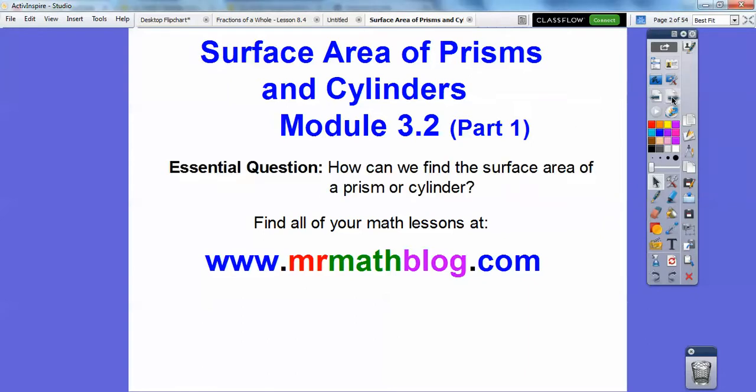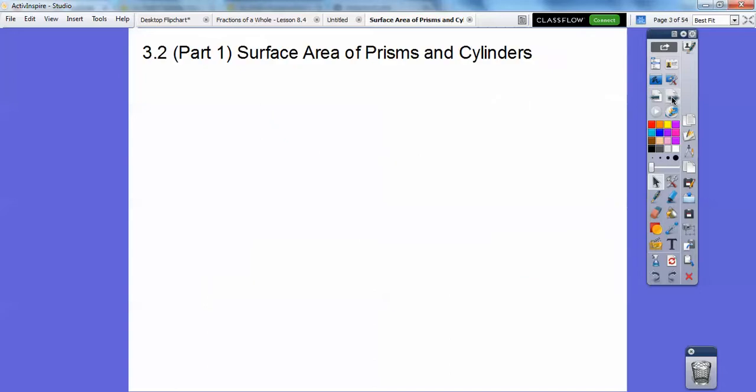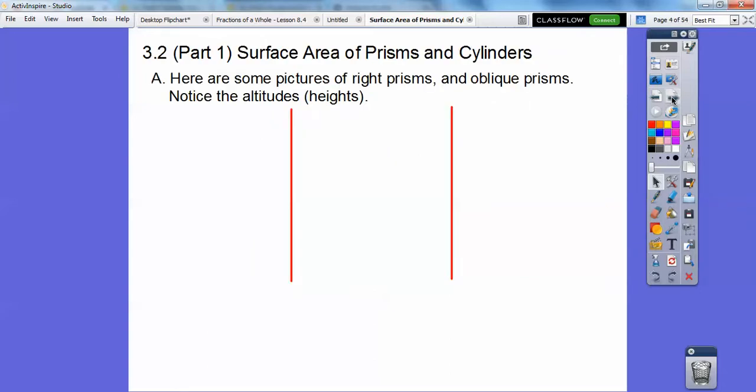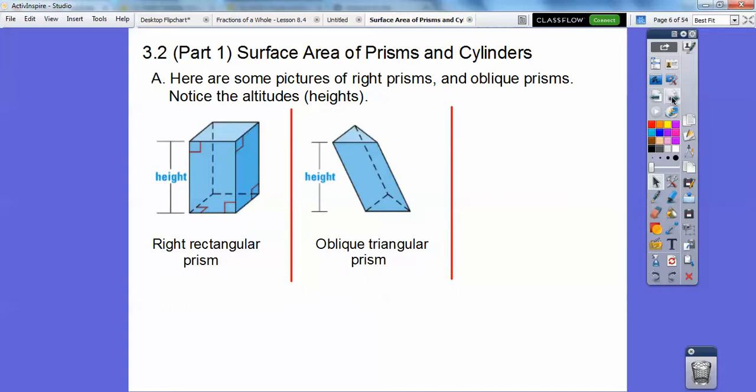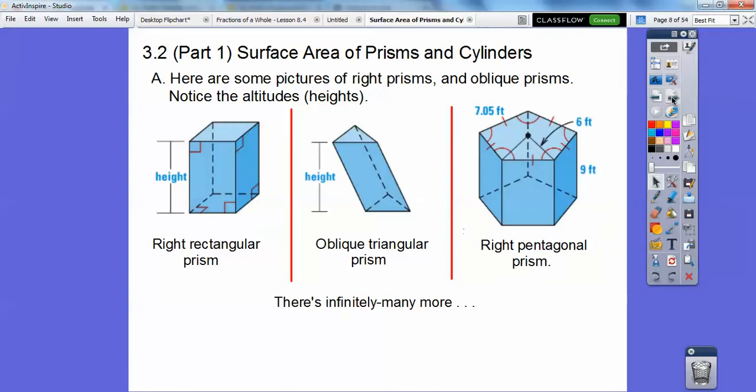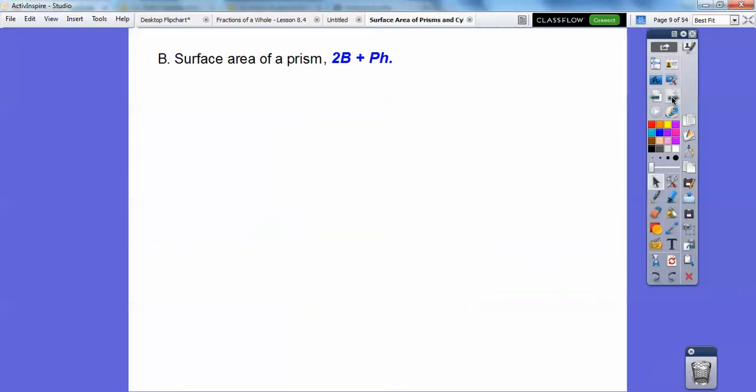So our question is, how can we find the surface area of a prism and a cylinder? I'm just going to jump right to the formulas. So here's some pictures of right prisms and oblique prisms. Here's a right rectangular prism, an oblique triangular prism, a right pentagonal prism. I showed these figures when we were finding volumes. So there's infinitely many more.